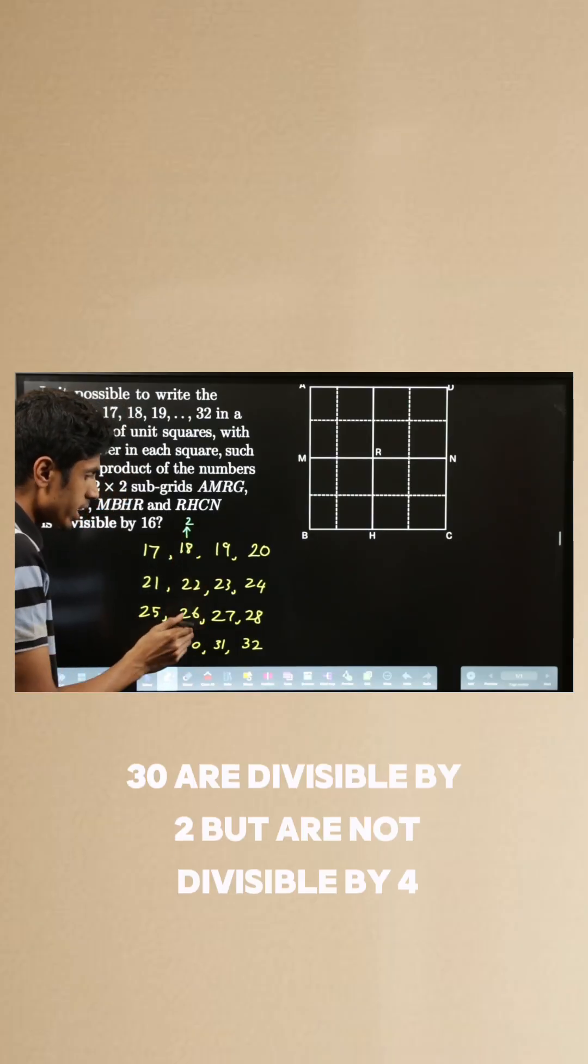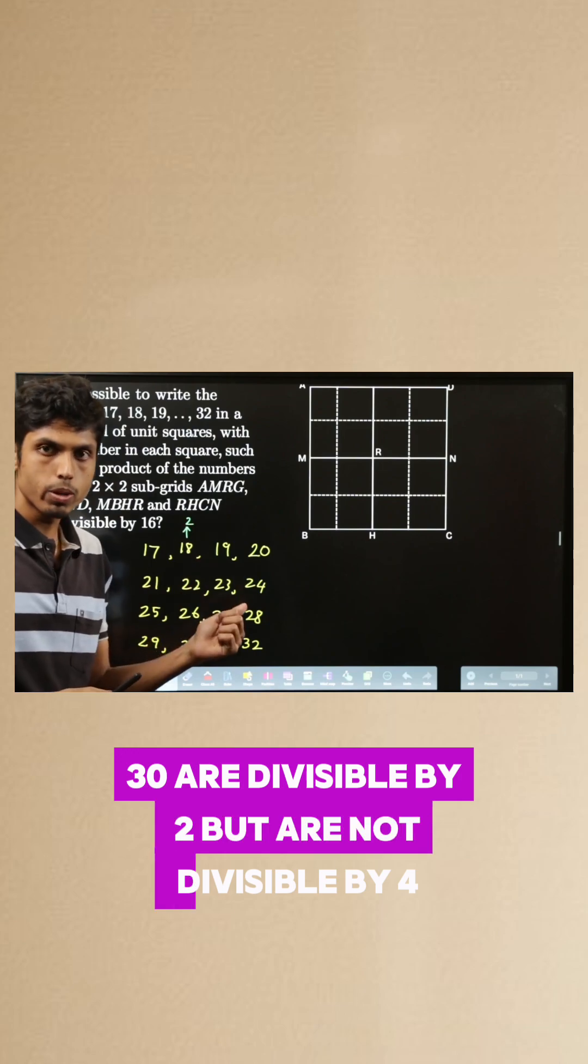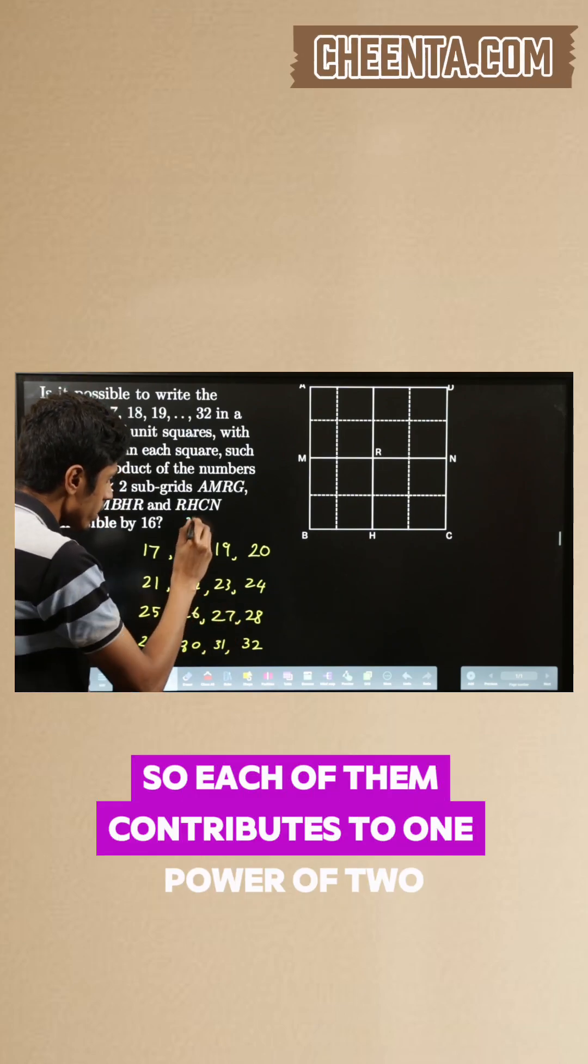18, 22, 26, 30 are divisible by 2 but are not divisible by 4. So each of them contributes 1 power of 2.